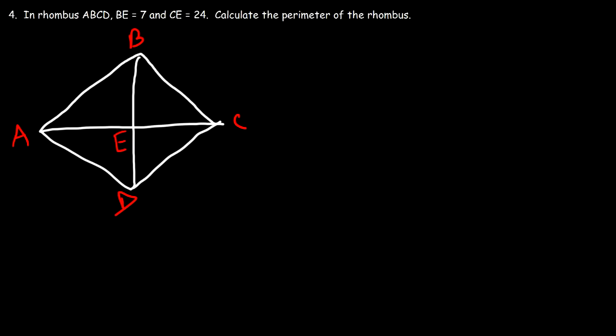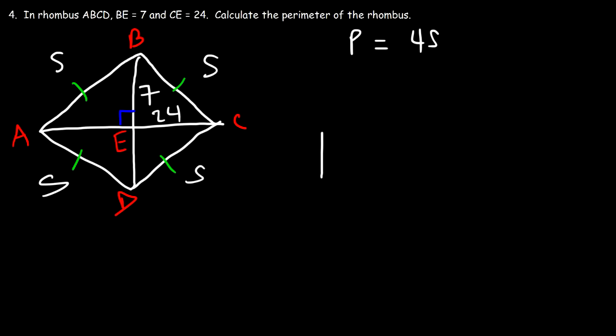Number 4. In rhombus ABCD, BE is 7 and CE is 24. Calculate the perimeter of the rhombus. The first thing you need to know is that the diagonals of a rhombus bisect each other at 90 degrees. Since the diagonals bisect each other, AE and EC are congruent, and BE and ED are congruent. So if BE is 7, then ED is 7, and if CE is 24, then AE is 24. All four sides of a rhombus are congruent — let's call each side s, so the perimeter is 4s. Notice that we have four congruent right triangles, where the legs are 7 and 24 and the hypotenuse is s. So let's use the Pythagorean theorem to calculate s.